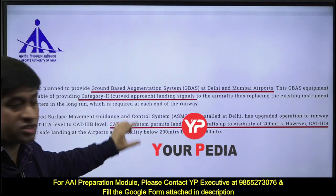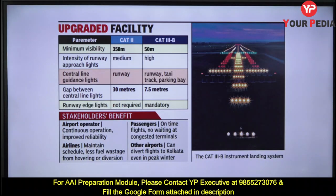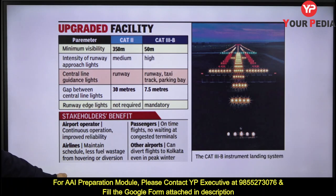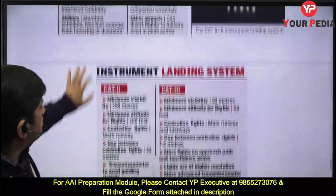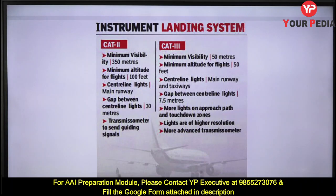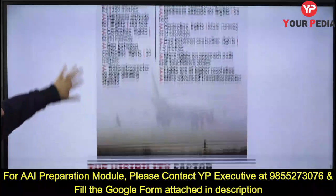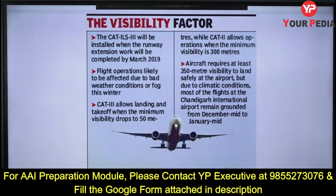CAT 3B relates to 50-meter visibility, with center line guidance, runway, taxi track, parking bay, and gap between centerline lights. The more important thing is the visibility norm: for CAT 3B, visibility should be 50 meters or more. CAT 2 and CAT 3 Instrument Landing Systems are important terms here. I will send this entire document on a WhatsApp group — please revise it as it is very important for this exam.